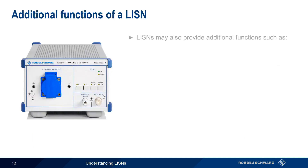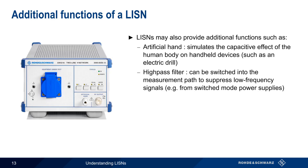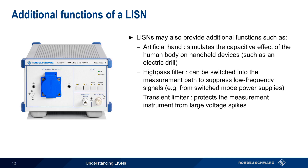As mentioned, a LISN may provide additional functions. One of these is an attachment for an artificial hand, which simulates the capacitive effect of the human body on a handheld device — for example, an electric drill. A switchable high-pass filter can be used to suppress certain types of low-frequency signals, like those from switched-mode power supplies. Transient limiters may be provided as a means of protecting the measurement instrument from large voltage spikes. And finally, remote control allows a LISN to be controlled by an attached measurement instrument or by an automation environment.